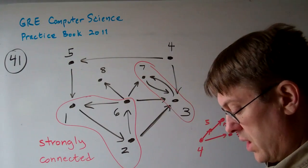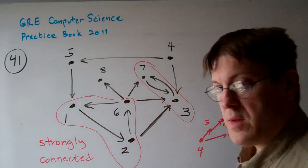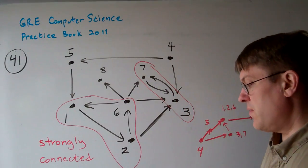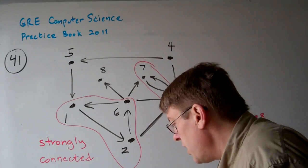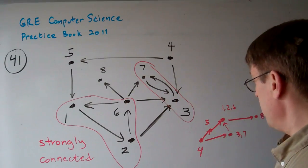Now, the only one that reads this way is number A. B has the same information, but it has an additional line from 4 to 1, 2, 6. I don't know where that came from. But now you'll notice that this graph here is not cyclic.